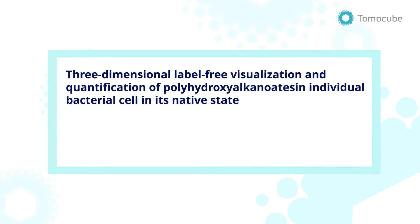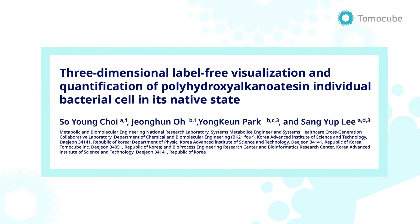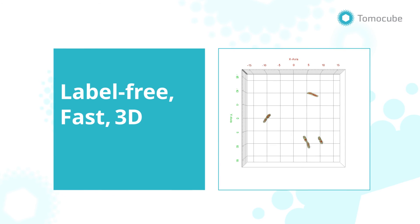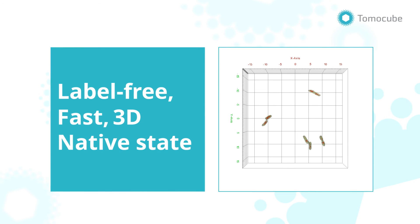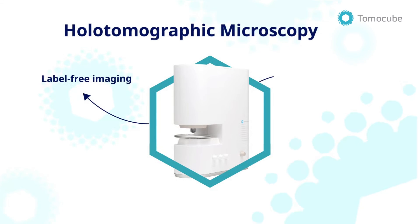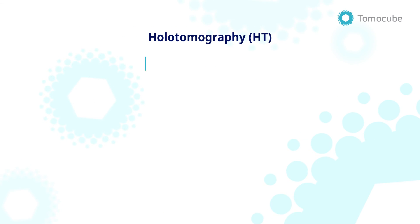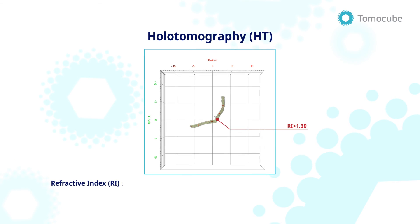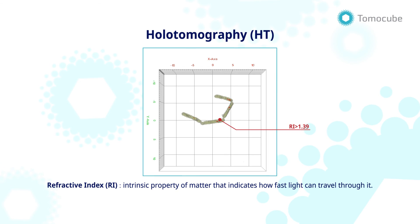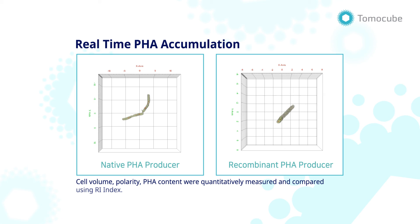An alternative mechanism of PHA synthesis has been uncovered using Tomocube's holotomography technology. Here, holotomography offers a label-free, fast, 3D imaging method that identifies PHA granules in the native cell state. It images cells and identifies PHAs using refractive index, an intrinsic property and indicator of how fast light can travel through it. In vivo, PHA granules were identified by the distinctively high refractive index region.